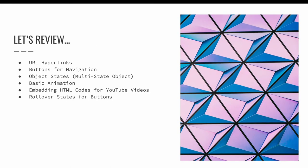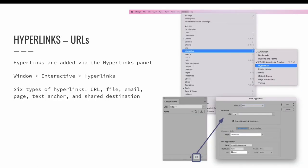Let's review the six forms of interactivity covered in InDesign: URL hyperlinks, buttons for navigation, object states, basic animation, embedding HTML codes for YouTube videos, and rollover states. Hyperlinks are added via the hyperlinks panel. They can be applied to objects or text, and InDesign can create six types of hyperlinks: URL, file, email, page, text anchor, and shared destination.